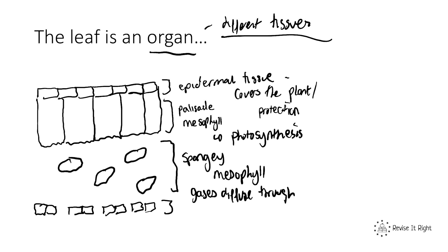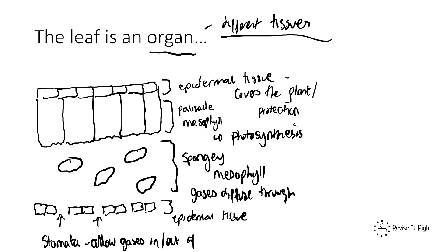At the bottom you've got the lower epidermis, which again is epidermal tissue that adds a layer of protection and covers the plant. You'll also notice tiny little pores or holes in the bottom — these are called stomata. They allow gases in and out of the leaf, for example carbon dioxide going in and oxygen going out. These are controlled by guard cells, which are the cells next to the stomata that control the opening and closing of the stomata.